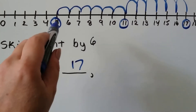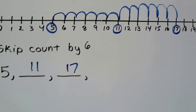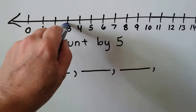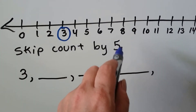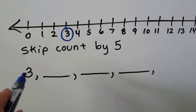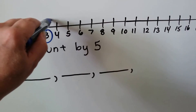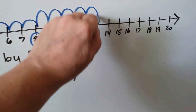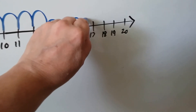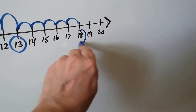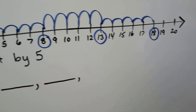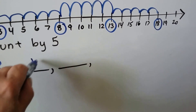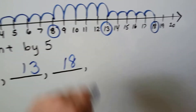Whatever the first number is, that's where we start, and we count the hops to see where we land. Let's try it one more time — we're going to skip count by five, but we're starting with a three. Normally when we skip count by fives we start with a five, but we can start anywhere. One, two, three, four, five — that's an eight. One, two, three, four, five — that's a thirteen. One, two, three, four, five — that's an eighteen. So we have: three, eight, thirteen, and eighteen.